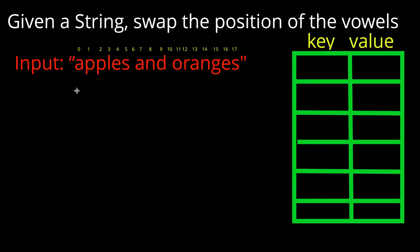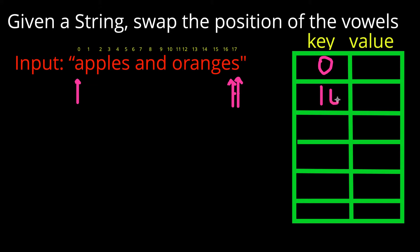Let's run through a full example to make how this algorithm works super clear. I've labeled every character by its index. We initialize two pointers, one at the beginning and one at the very end of the string. If the left pointer is pointing to a vowel we stop it there, otherwise we keep moving the right pointer inwards until it's also pointing to a vowel. Once both pointers are pointing to vowels, we record their indexes — 0 and 16 — and swap their locations in the hash map.